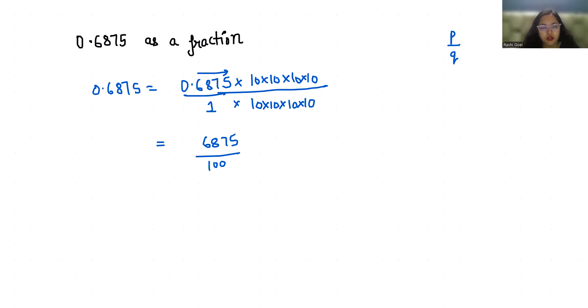We are going to reduce it. So first I'm going to divide it by 5. So this gave us 1375 by 2000.